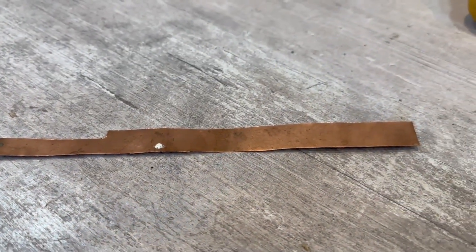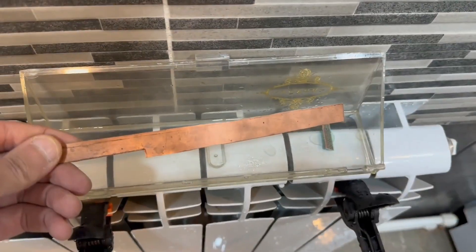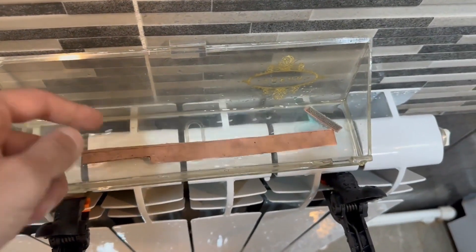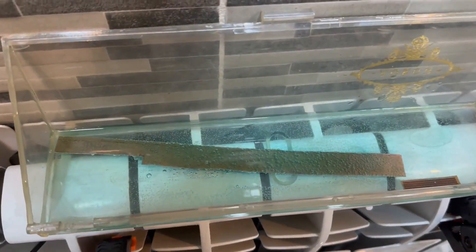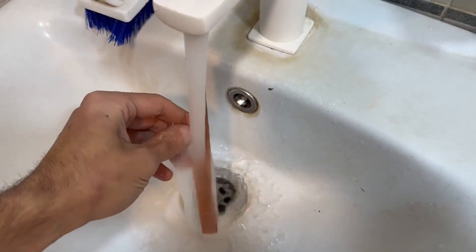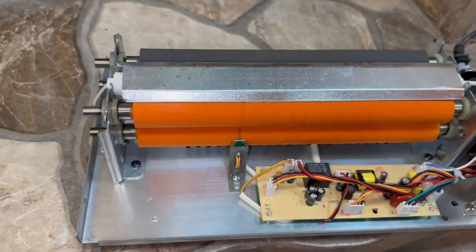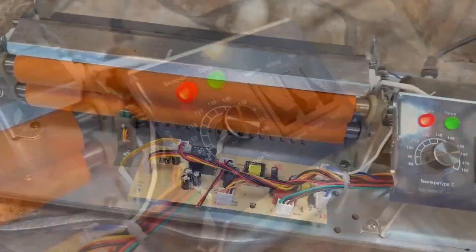Next, the foil needs to be cleaned and degreased. This is done with fine sandpaper, or you can soak it for a couple of minutes in an etching solution. But then it's essential to rinse everything thoroughly and dry it. Then turn on the laminator, setting it to the maximum temperature.